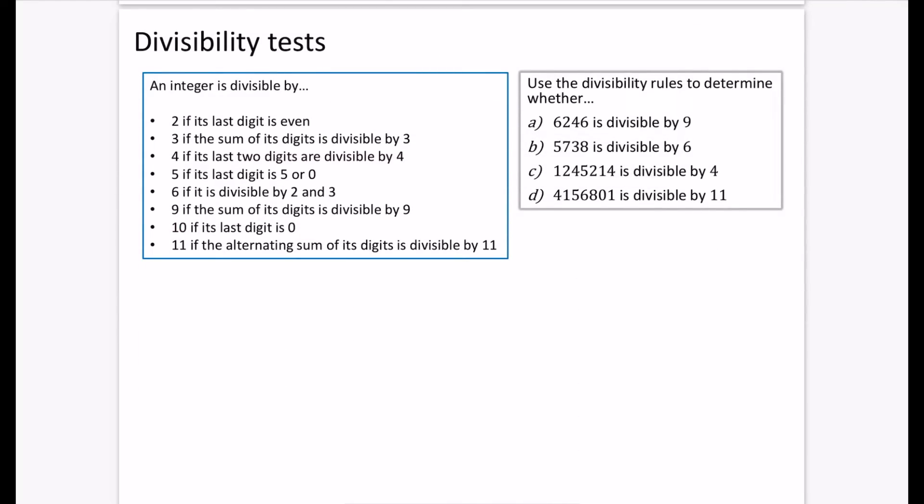Ten is if it ends in zero. And this is the most interesting one. It is divisible by 11 if the alternating sum of its digits is divisible by 11. We will demonstrate that with this one rather than me trying to explain it here. Alternating sum basically means instead of adding them all up, you add, subtract, add, subtract, add, subtract. And if that result is divisible by 11, then it's divisible by 11.